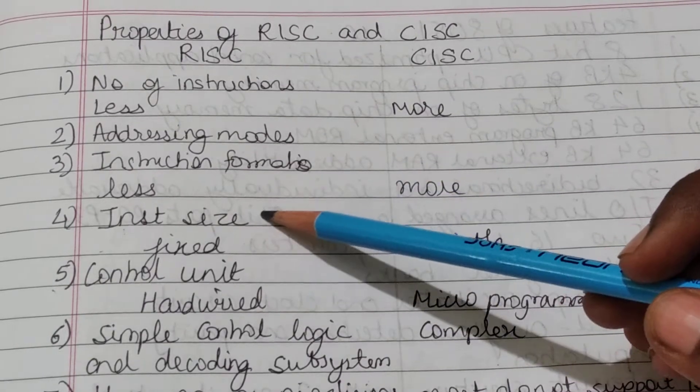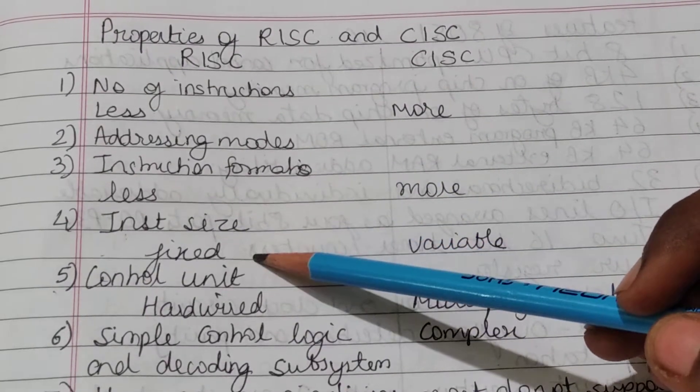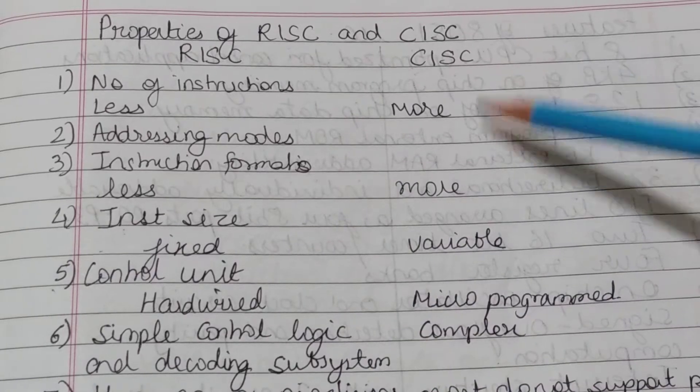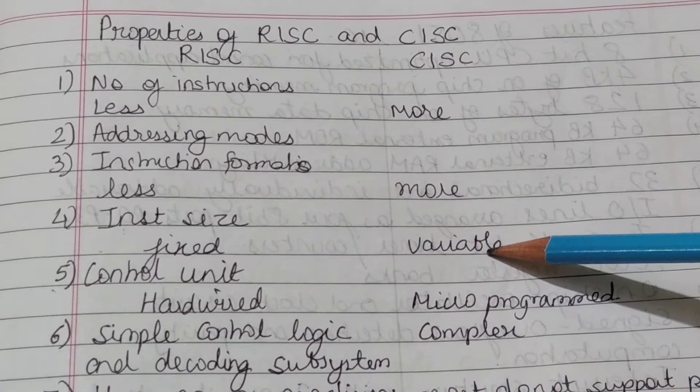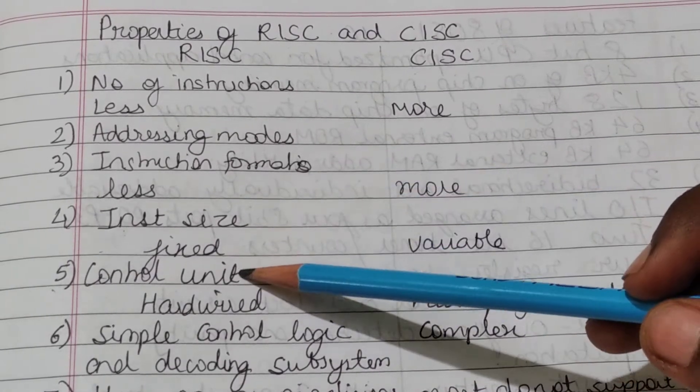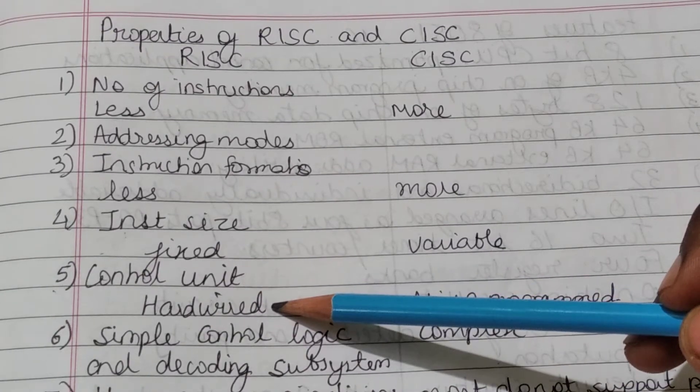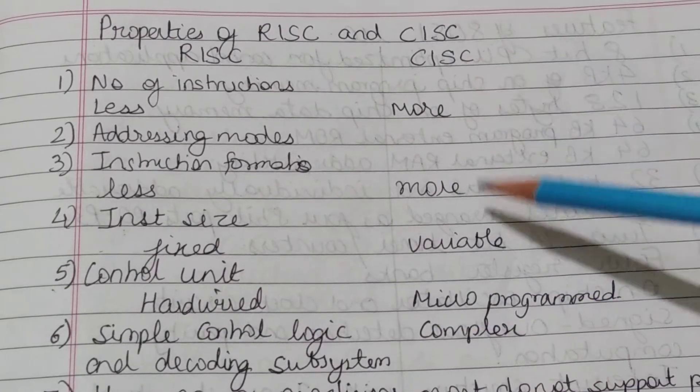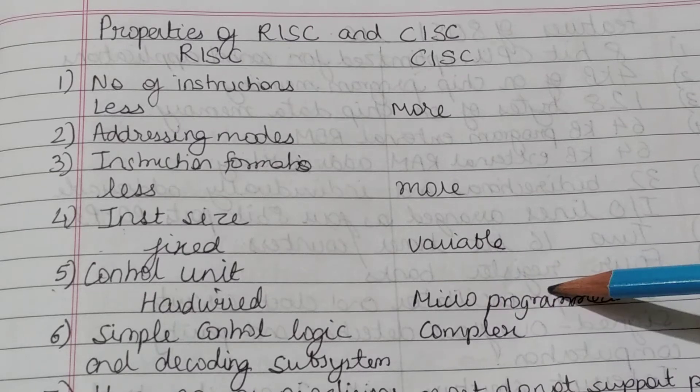For RISC, the instruction size is fixed, but for CISC it's variable. RISC has a hardwired control unit, while CISC has a microprogrammed control unit.